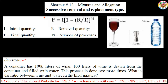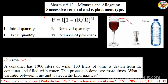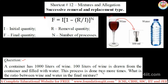A container has 1000 liters of wine. Just I am showing a diagram here — there is one container with 1000 liters of wine. 100 liters of wine is drawn from the container and filled with water. This process is done two more times. What is the ratio between the wine and water in the final mixture?